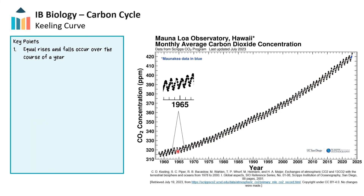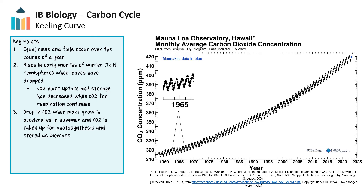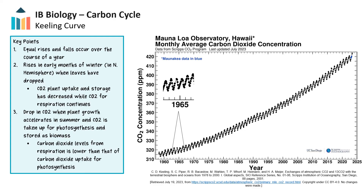Notice too that there are steady fluctuations in the curve. Each rise is followed by an almost equal decrease in carbon dioxide over the course of a year, then followed by another almost equal increase, and the pattern repeats. Looking at each year, there is a steady rise in the early months of winter in the northern hemisphere when plant leaves have dropped, thereby reducing carbon dioxide uptake and storage of carbon, while organisms continue to respire and release carbon dioxide. This is followed by a drop in carbon dioxide levels when plant growth during the summer in the northern hemisphere accelerates and carbon dioxide is taken up for photosynthesis and stored in biomass. Carbon dioxide levels released from respiration are lower than that of carbon dioxide uptake for photosynthesis.